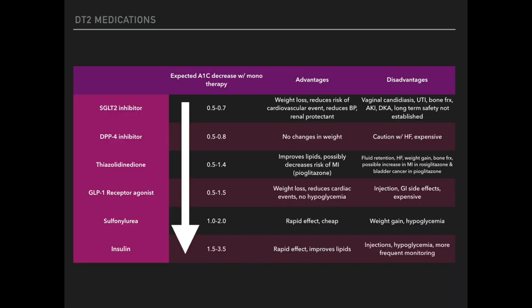Before diving into each medication class individually, there is a comparison graph I put together using information from UpToDate, organized to show which drugs decrease A1C the most. Starting at the top with SGLT2 inhibitors showing the least reduction on this scale, up to insulin, which can reduce A1C by up to 3.5% — the biggest reduction. The graph also includes advantages and disadvantages, and I definitely recommend reviewing it and getting familiar with the information as it will really benefit your boards studying.